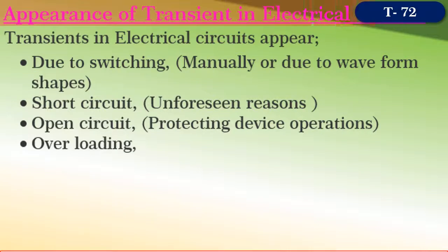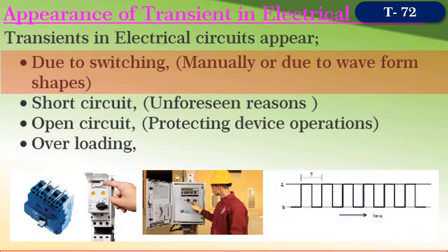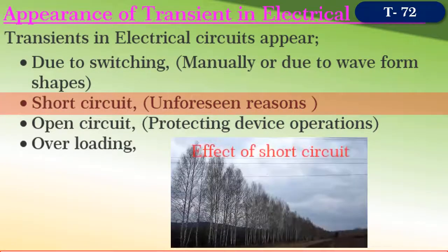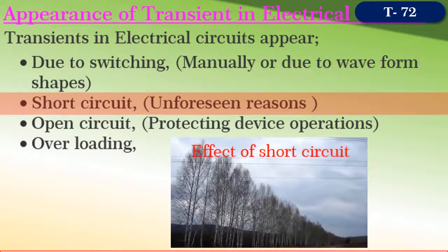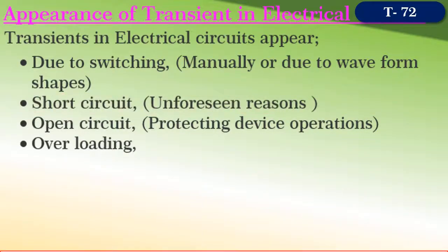Now, let us see when and why transients appear in electrical networks. In the first place, transients may appear due to switching — switching could be manual, or due to the operation of protecting devices, or due to the shape of supply waveforms such as clock signals. Transients may also appear due to unforeseen reasons such as faults. When faults occur or when the system is overloaded, the protecting devices operate and disconnect the supply. Under such circumstances also, transients may appear and produce large variations of voltages and currents.